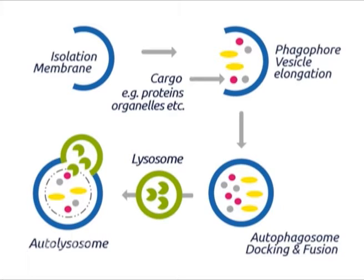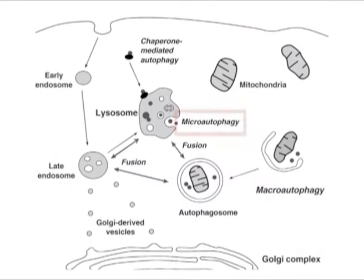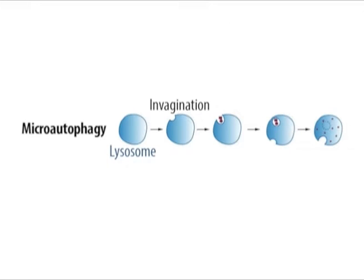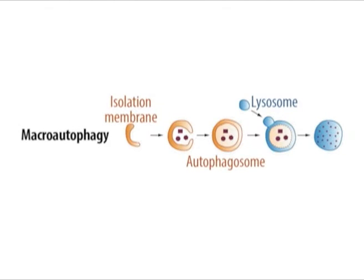The term autophagy covers three processes: micro-autophagy, macro-autophagy, and chaperone-mediated autophagy. Micro-autophagy is the transfer of cytosolic components into the lysosome by direct invagination of the lysosomal membrane and subsequent budding of vesicles into the lysosomal lumen. Macro-autophagy involves formation of a double membrane structure called the autophagosome, which sequesters cytosolic material and delivers it to the lysosome for degradation.